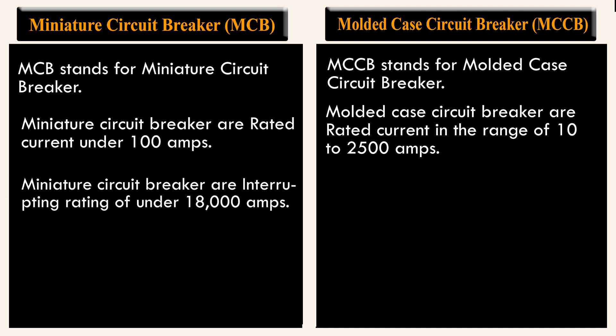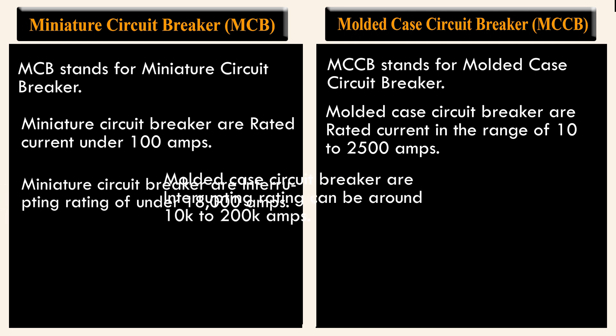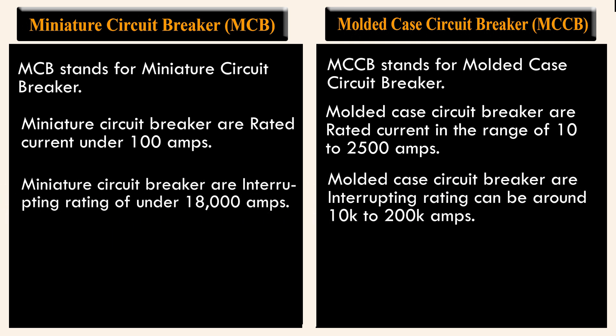Miniature circuit breakers have an interrupting rating of under 18,000 amps. Molded case circuit breakers have an interrupting rating that can be around 10,000 to 200,000 amps.